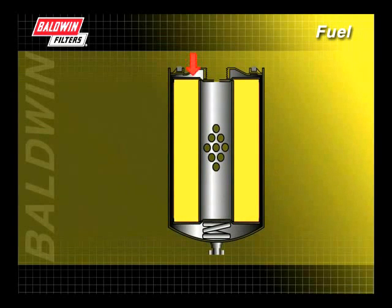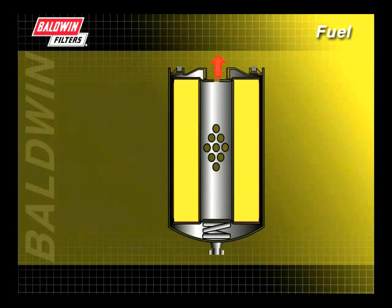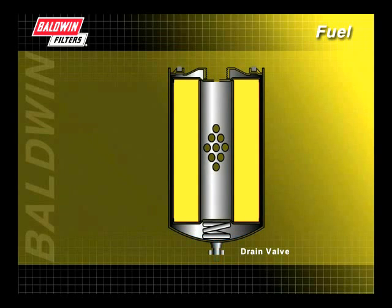Fuel enters the unit, is filtered through the media, passes through the center tube, and into the engine. On fuel-water separators, water that is collected during this process is released by turning the drain valve.